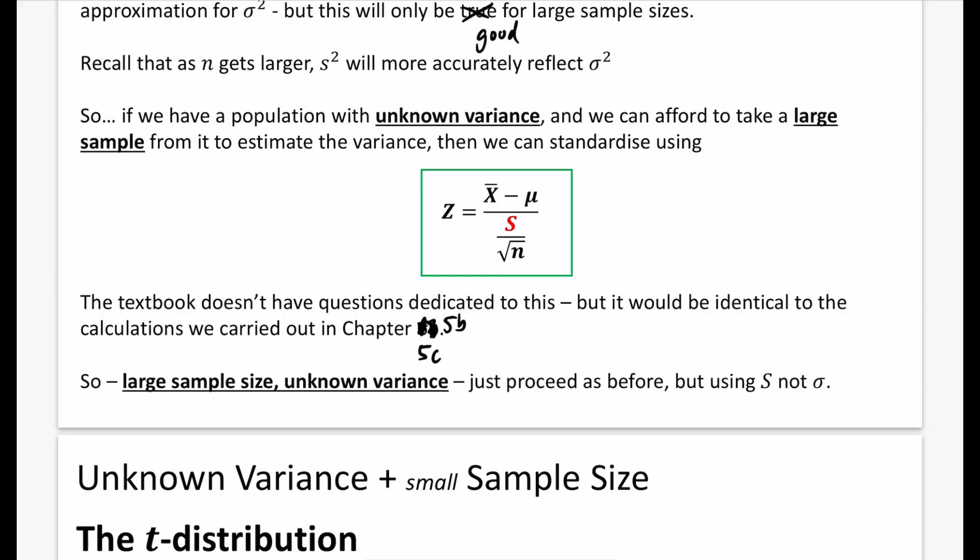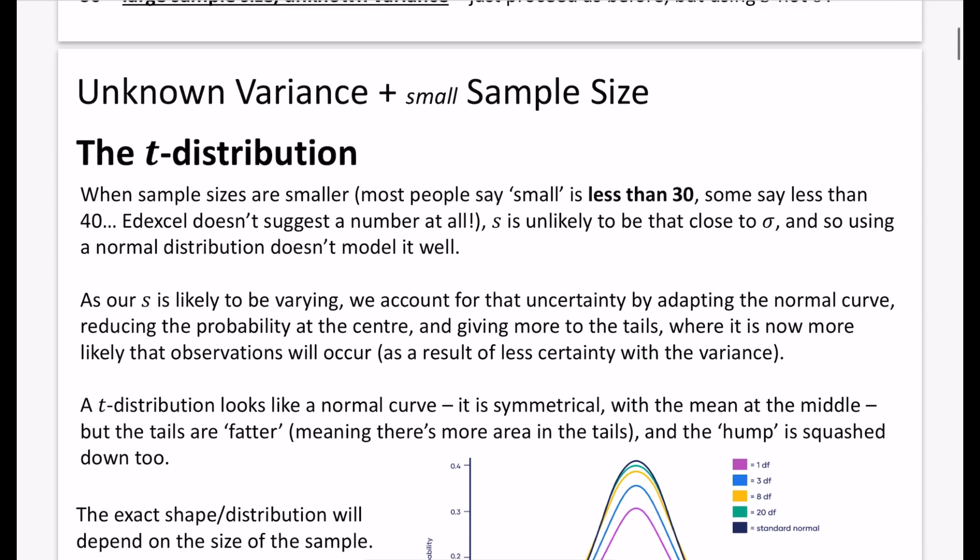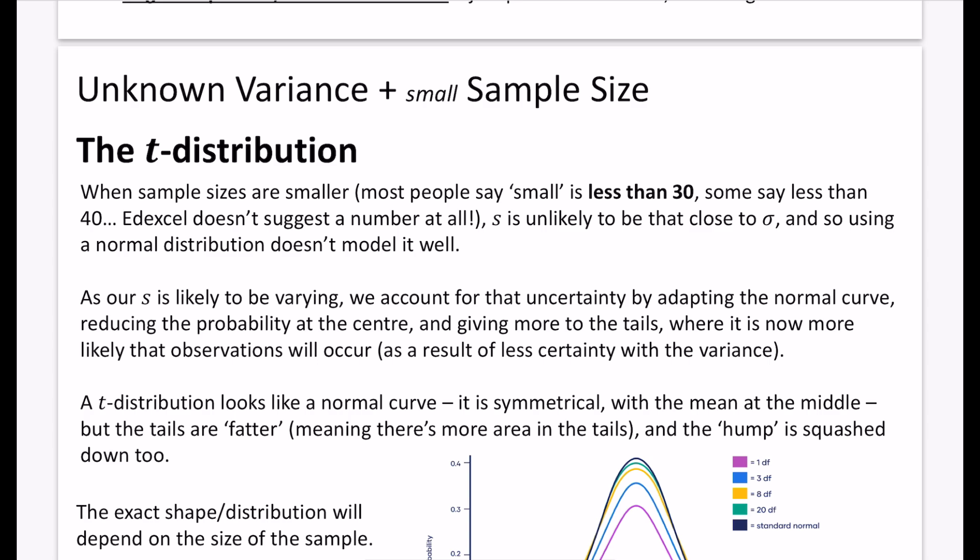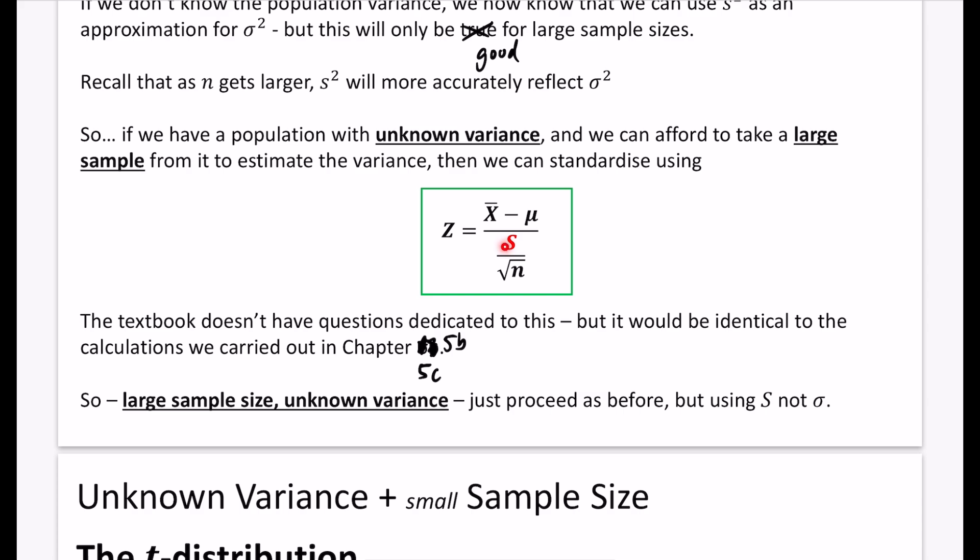However, they're not really going to answer many questions on these kinds of things. Instead, we're going to be interested now in things where we have small sample sizes. If we have an unknown variance and we have a small sample size, we run into a new distribution, which is called the t distribution. So the biggest giveaway for knowing that it's going to be using a t distribution is if the sample size is small. When sample sizes are smaller, and most people will say that small is less than 30, some say less than 40, and Edexcel actually doesn't even suggest a number at all, then s, the sample standard deviation, is unlikely to be that close to σ. And so using a normal distribution doesn't model it very well.